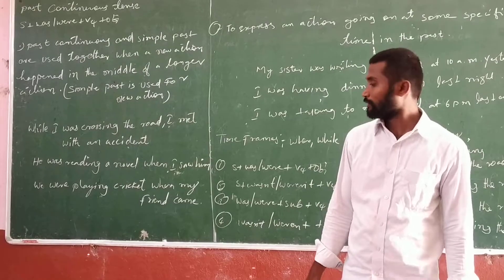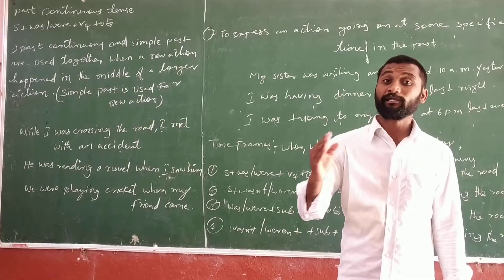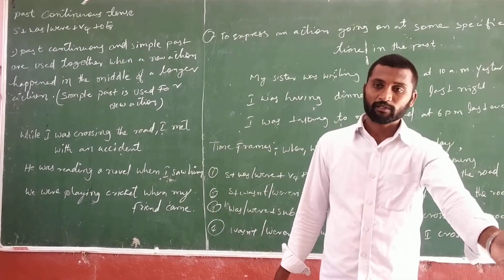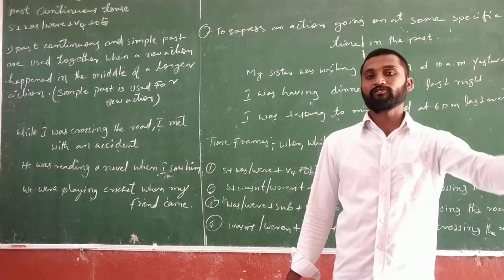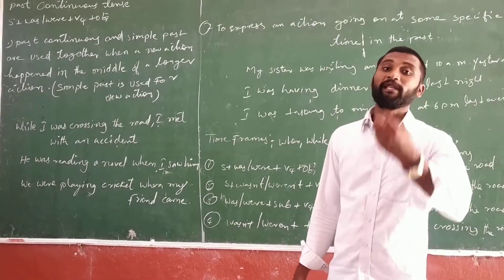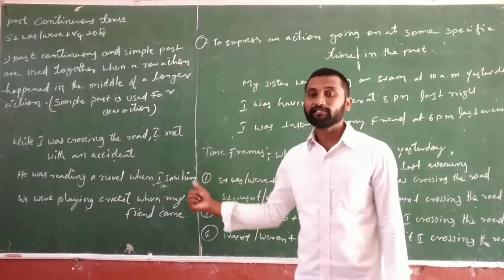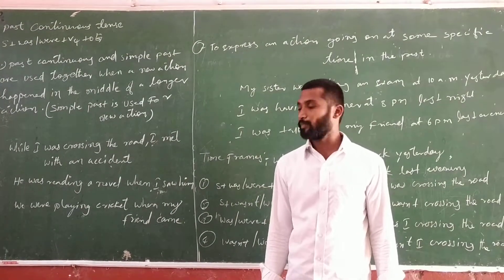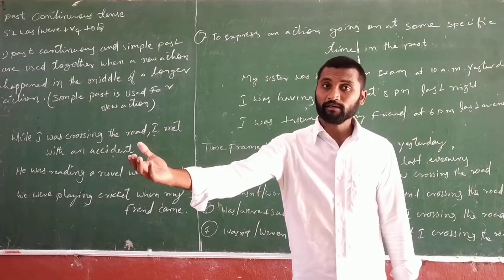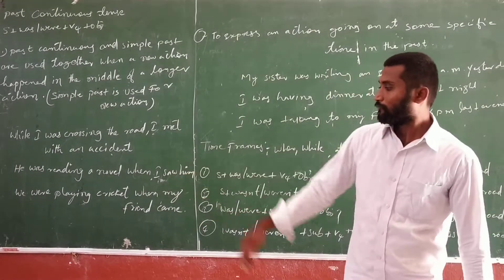Next example: 'He was reading a novel when I saw him.' 'He was reading a novel' is past continuous tense — the action was started in the past and is going on. We used 'when' after the past continuous tense, then the simple past: 'I saw him.' So, 'I saw him' is simple past tense.